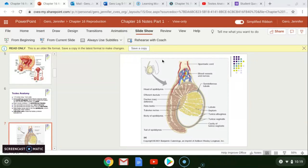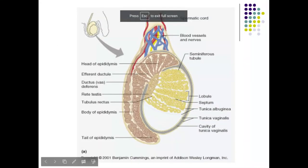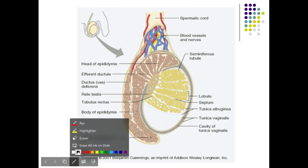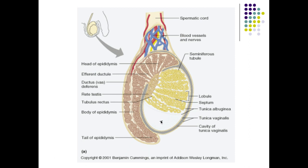We're going to continue with chapter one notes on the male reproductive system, starting with a quick review of testicular anatomy. The testis sits outside of the body in the scrotum and is surrounded by two connective tissue sheets: the outer tunica vaginalis and the inner tunica albuginea. The tunica albuginea sends septa into the testis, separating it into sections called lobules.